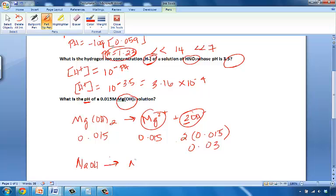that would dissociate to form Na+ and OH-, so if this was 0.015 molar, this would be 0.015 molar, and the hydroxide would be 0.015 molar. But because we have two hydroxides up here, we get double the amount of hydroxide, so not just 0.015, but 0.015 times 2, or 0.03.